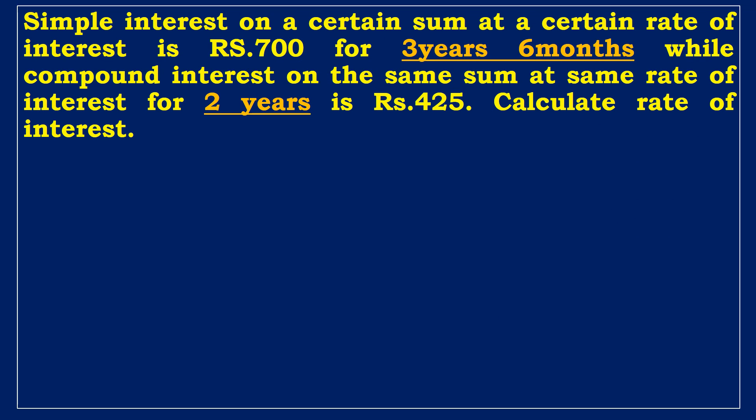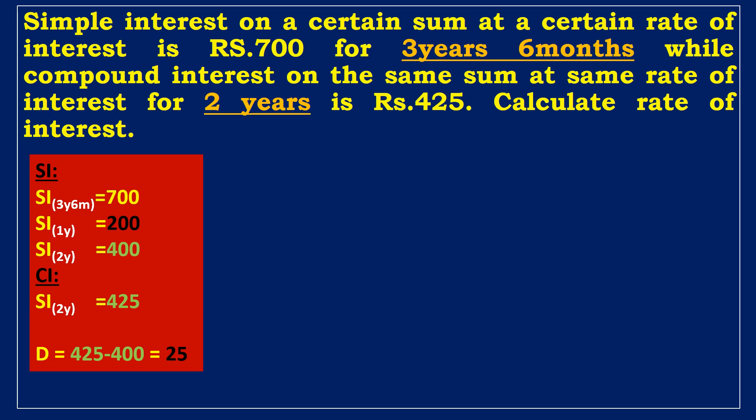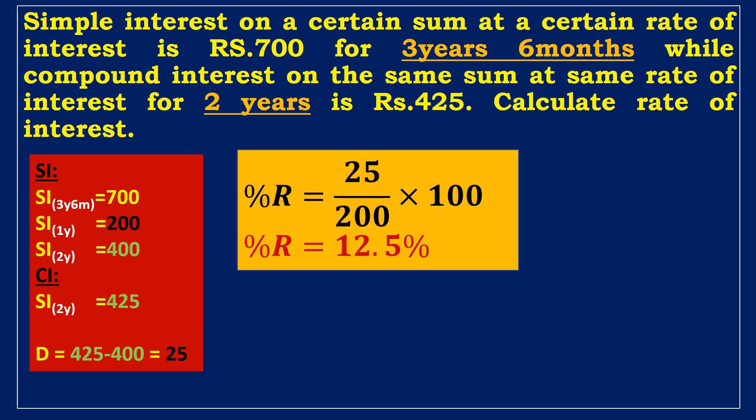Second example: Simple interest on a certain sum at a certain rate is 700 rupees for 3 years and 6 months, while compound interest on the same sum at the same rate for 2 years is 425 rupees. Calculate the rate of interest. SI for 3.5 years = 700, so SI for 1 year = 200, and SI for 2 years = 400 rupees. CI for 2 years = 425 rupees. Difference between CI and SI = 25 rupees. Applying the formula, rate = (25/200) × 100 = 12.5% per annum.